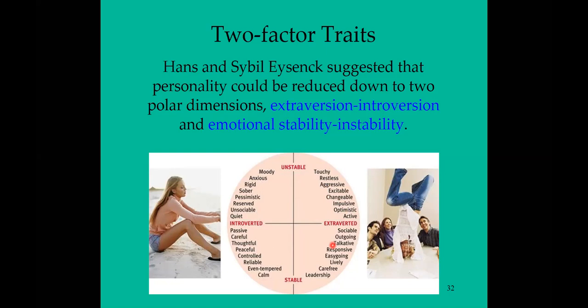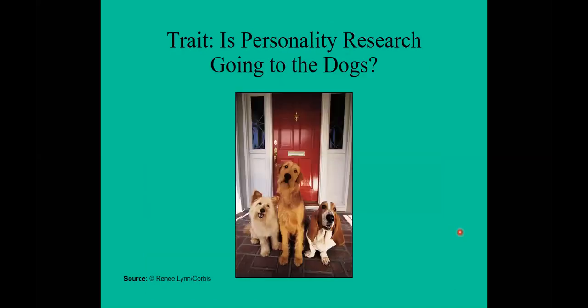Looking at pictures, which seems to be a person who is more of an introvert? The person on the left, sitting on the beach thinking, would be more typical of an introvert. The person on the right, hanging around with others, active and showing off, represents the extreme extrovert.